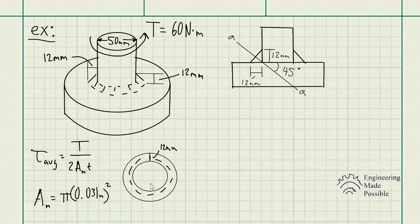We know what the torque being applied is: 60 newton meters. We have the mean area. Now all we need is the thickness. In this case, since the problem statement hints that the critical section along where that fillet weld fails is along section aa, so this portion here,